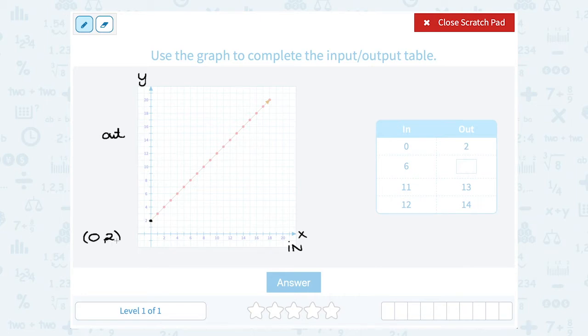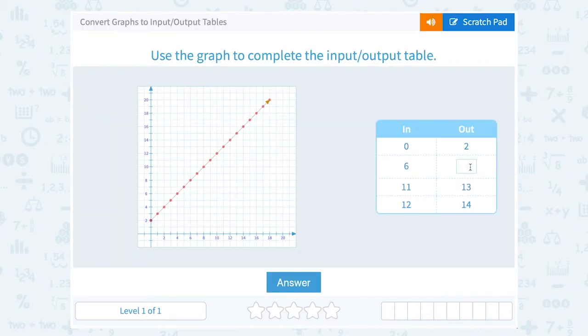That's our y value, or the up and down number. So if I go to 6, I want to read the other half of my ordered pair. This is the point 6, because it's directly above the 6. And then I can read across to see that my y coordinate is 8, because it's 6 to the right and up 8. So that means the output, or the out number, is 8.